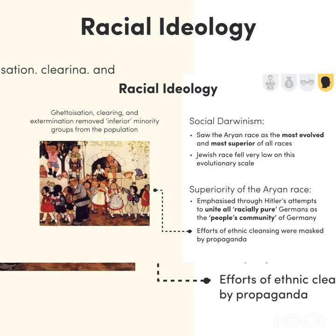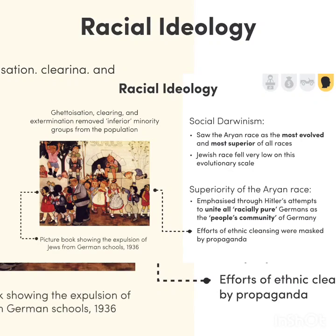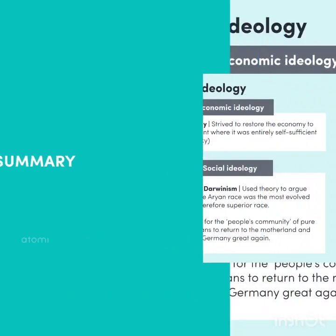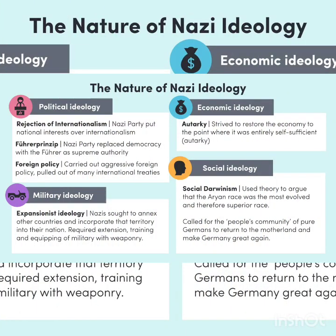The superiority of the Aryan race, made 'legitimate' through social Darwinism, was emphasized through Hitler's movement to unite all racially pure Germans as the people's community of Germany. There were calls for ancestral Germans to return to their motherland, while policies of ghettoization, ethnic cleansing, and eventually extermination removed minority groups deemed inferior. These extensive efforts were masked by propaganda campaigns enforcing the ideal of a racially pure Germany — ultimately promising to 'make Germany great again.'